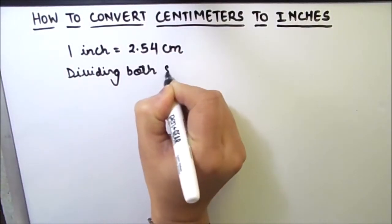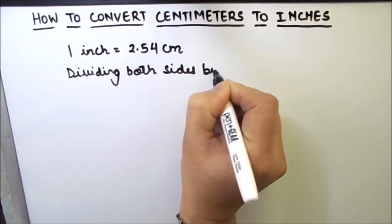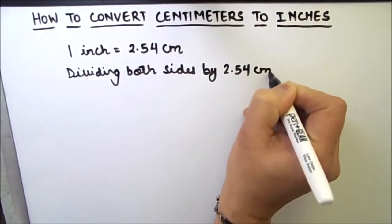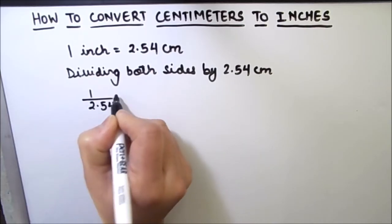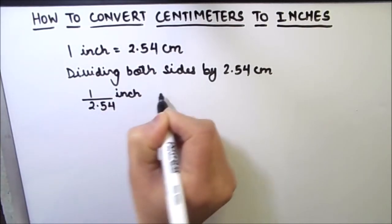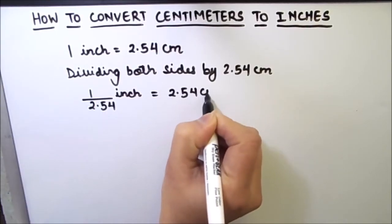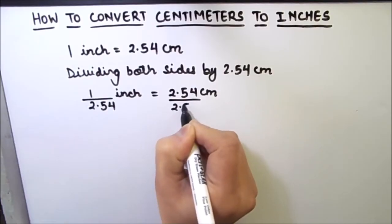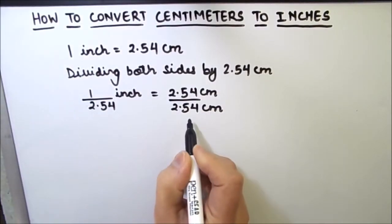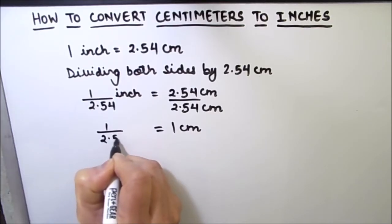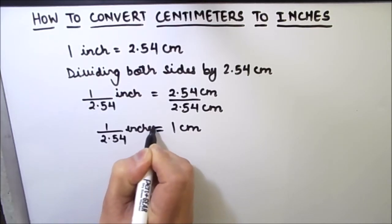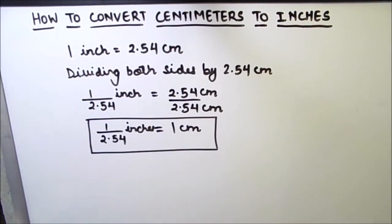Dividing both sides by 2.54, we get: one centimeter is equal to one divided by 2.54 inches. So this is the relation we are going to use to convert from centimeters to inches. Whenever we need to convert from centimeters to inches, we are going to divide the number by 2.54.